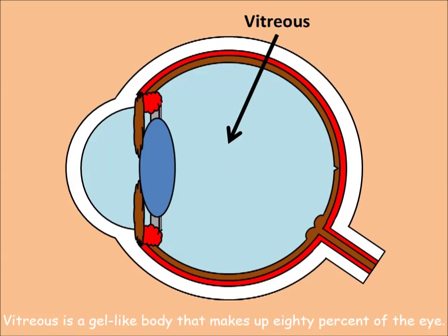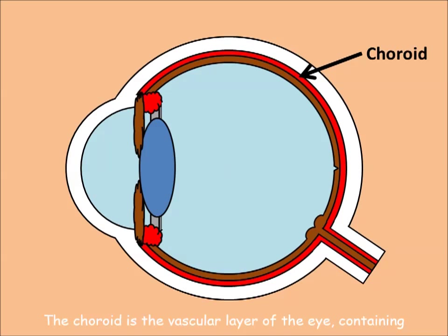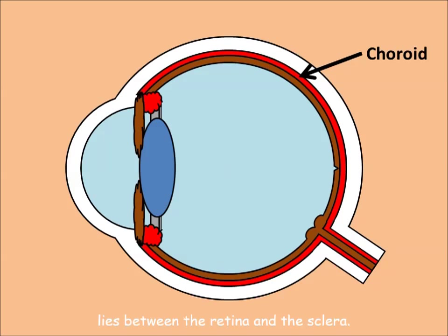Vitreous is a gel-like body that makes up 80% of the eye. The vitreous holds the eyeball's shape and provides nutrients for the retina. The choroid is the vascular layer of the eye, containing connective tissue and blood vessels, and lies between the retina and the sclera.